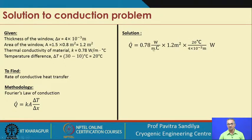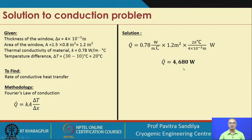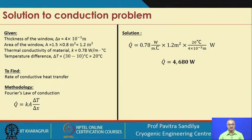With all units in SI, cancelling out gives us Q = 4680 watt or 4.68 kilowatt. This is the heat coming through the glass window with a thickness of 4 mm.